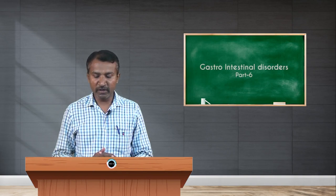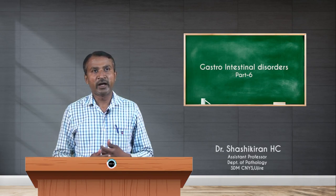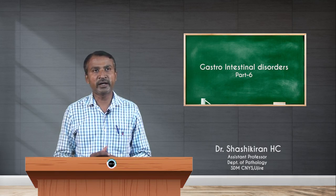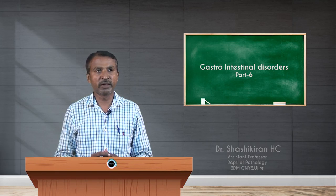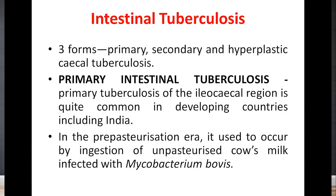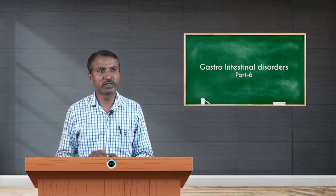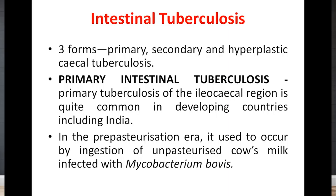Welcome to the session. As we all know, tuberculosis mainly attacks our lungs, but here is a condition called intestinal tuberculosis. There are nearly three forms of intestinal tuberculosis: primary, secondary, and hyperplastic cecal tuberculosis.